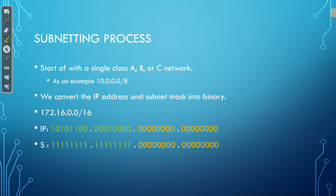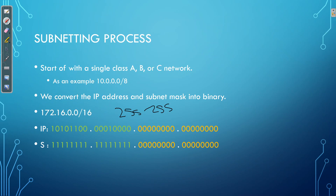So the first step: start off with a single Class A, B, or C network. In this example, I've got Class B network 172.16.0.0. By default, that's got a subnet mask of 255.255.0.0.